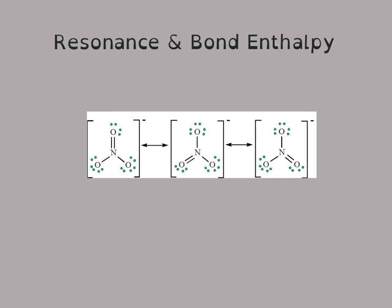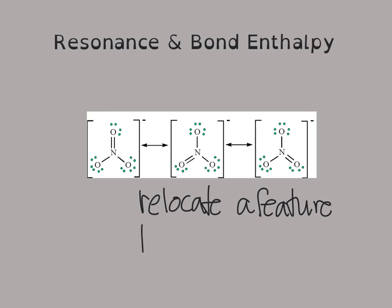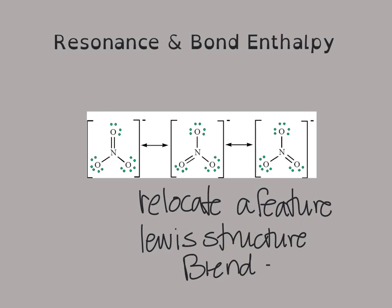What really happens in resonance is this: you have an equally likely chance that you could relocate a feature in a different spot in the Lewis structure. What really happens is you have a blend of all the Lewis structure potentials, and that is called resonance. No one of these is formed — it's kind of like an average. You form some of all of them, so it is assumed that all of them are possible.